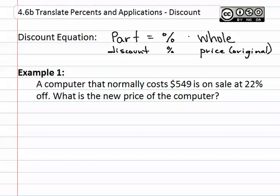We will now see how this is used in example one. Example one asks, a computer that normally costs $549 is on sale at 22 percent off. What is the new price of the computer?